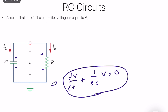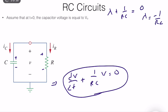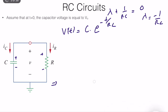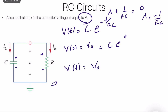To solve it, we need to find the characteristic equation. The characteristic equation is: lambda plus 1 over RC equals zero. So lambda equals minus 1 over RC. I know that my solution V of t is equal to some constant C times e to the power of minus t divided by RC. Using the initial condition, V(0) equals V0 equals C times e to the power 0 equals C. So C equals V0.